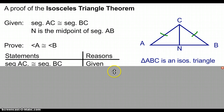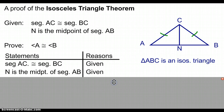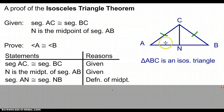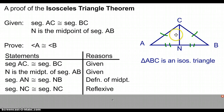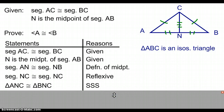Following our proof, we see that segment AC and BC are congruent because that is given to us, and N is also the midpoint of our base AB. Because N is the midpoint, we can say that segment AN and segment BN are congruent based off of the definition of a midpoint. We also know that segment NC is congruent to itself because of the reflexive property. Because we have three pairs of congruent sides, we know that triangle ANC and triangle BNC are congruent by the side-side-side theorem.